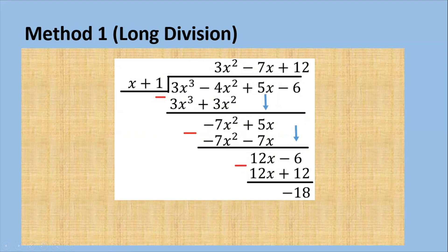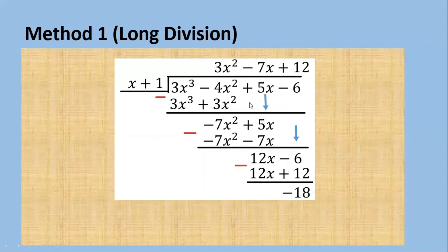How do we proceed? 3x cubed divided by x, that will be 3x squared. Next step, you will multiply the 3x squared by x plus 1, that is, you will get 3x cubed plus 3x squared. We subtract: 3x cubed minus 3x cubed is 0. Negative 4x squared minus 3x squared gives negative 7x squared, and then you can bring down the 5x.